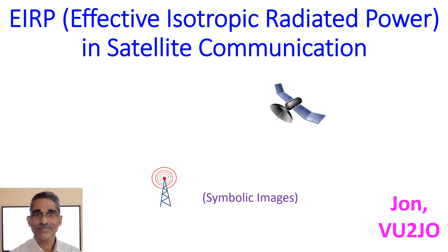An isotropic antenna is a theoretical one which radiates in all directions in a perfect spherical pattern. Gain of antennas are usually mentioned in comparison to the theoretical isotropic antennas as dBi. A dipole antenna has a gain of 2.15 dBi in the direction of the main lobe.